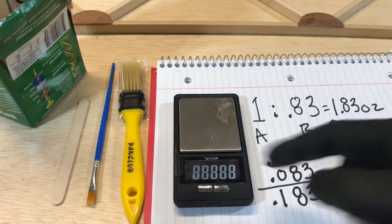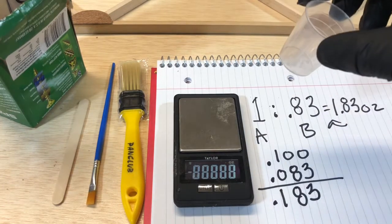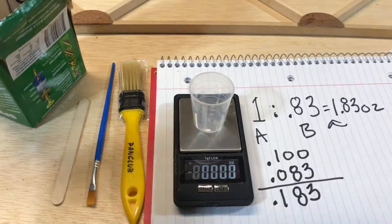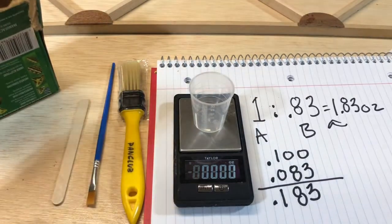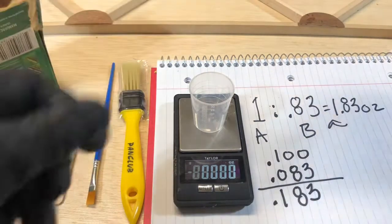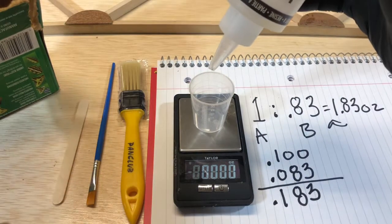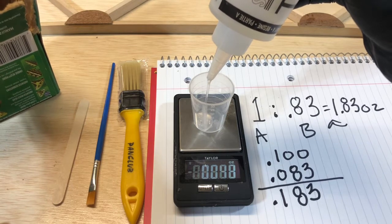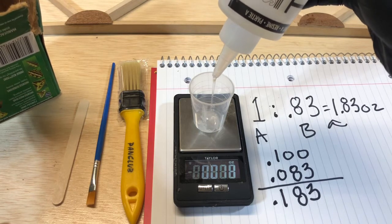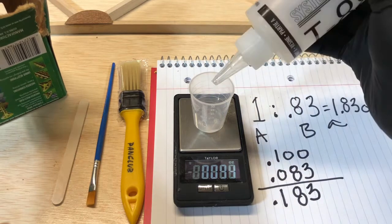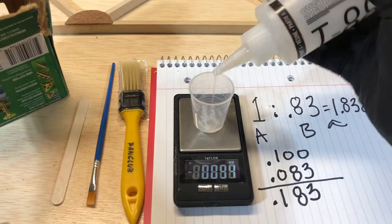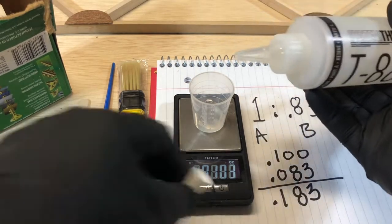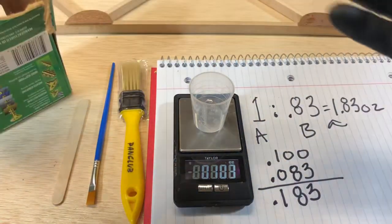So we'll fire the scale up again, put the cup on, zero it out. We're going to take part A first and all you're going to do is fill it in there until you get the decimal one zero zero. Okay, slow down near the end. You go over by a hair like that, it's not going to hurt anything. That's three thousandths of an ounce.